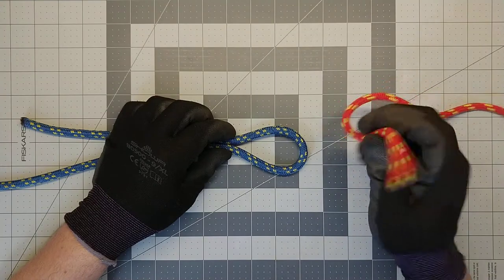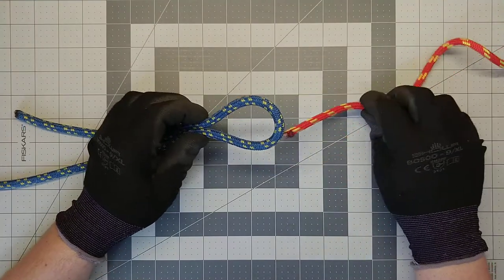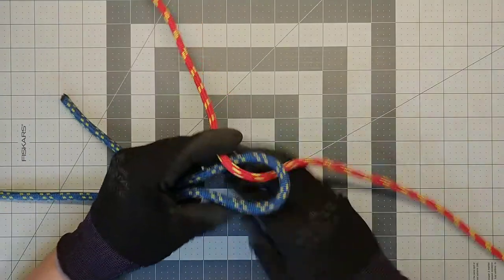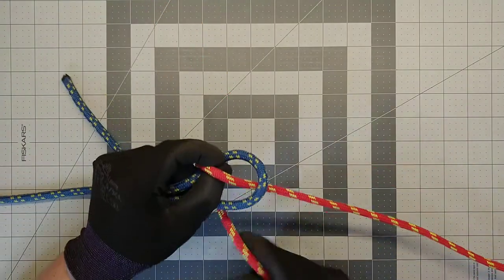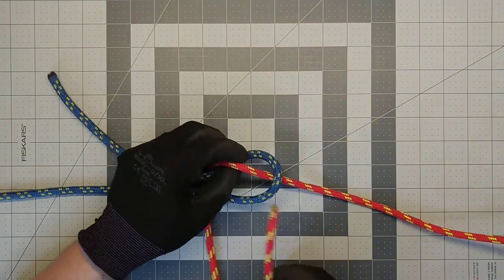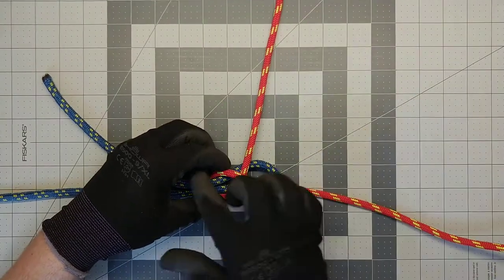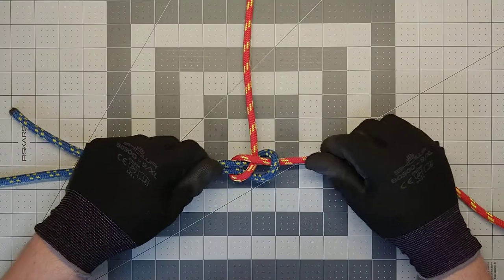We take rope number two, come up through our bight, go underneath, and then underneath the main line.